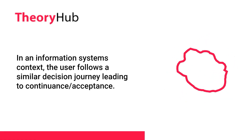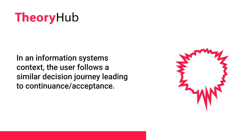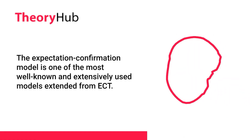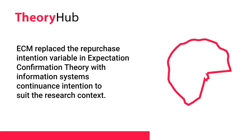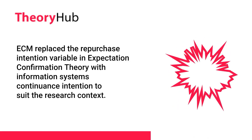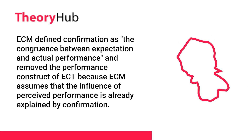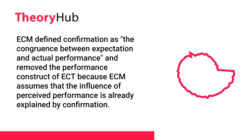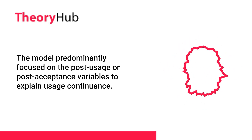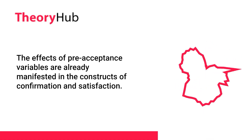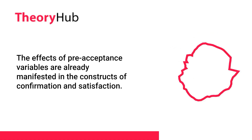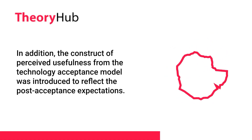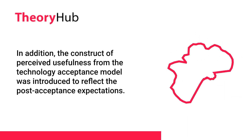In an information systems context, the user follows a similar decision journey leading to continuance and acceptance. The Expectation Confirmation Model (ECM) is one of the most well-known and extensively used models extended from ECT. ECM replaced the repurchase intention variable with information systems' continuance intention to suit the research context. ECM defined confirmation as the congruence between expectation and actual performance, and removed the performance construct because ECM assumes the influence of perceived performance is already explained by confirmation. The model predominantly focuses on post-usage or post-acceptance variables to explain usage continuance. The effects of pre-acceptance variables are already manifested in the constructs of confirmation and satisfaction. Additionally, the construct of perceived usefulness from the Technology Acceptance Model was introduced to reflect post-acceptance expectations.